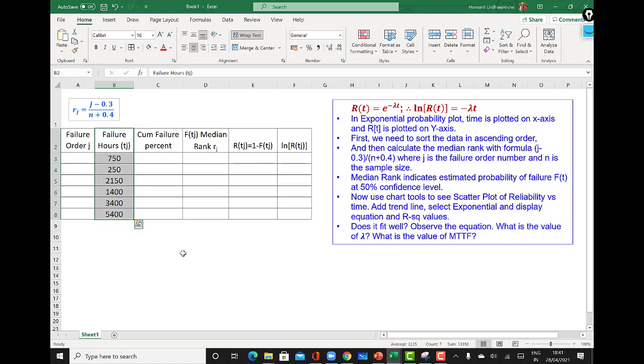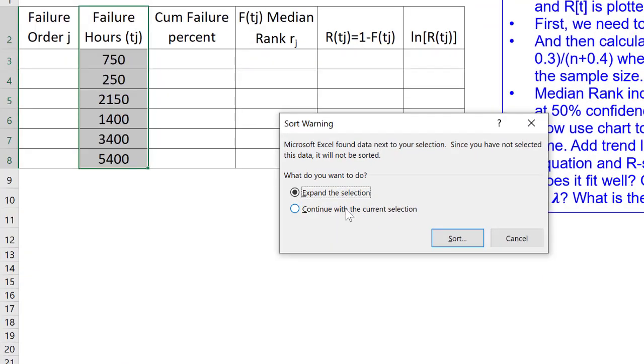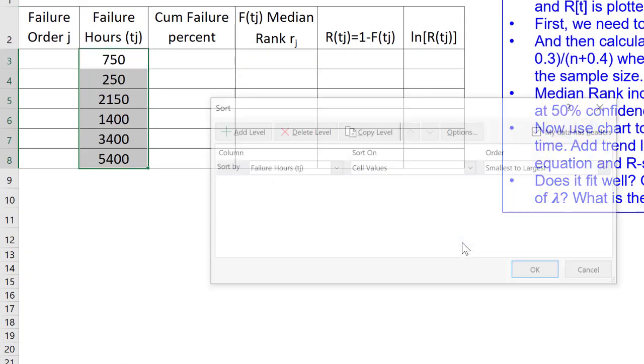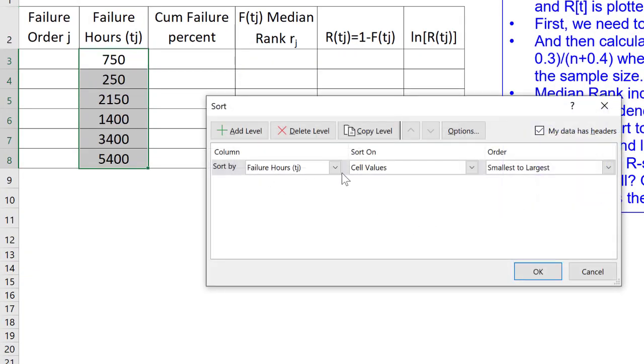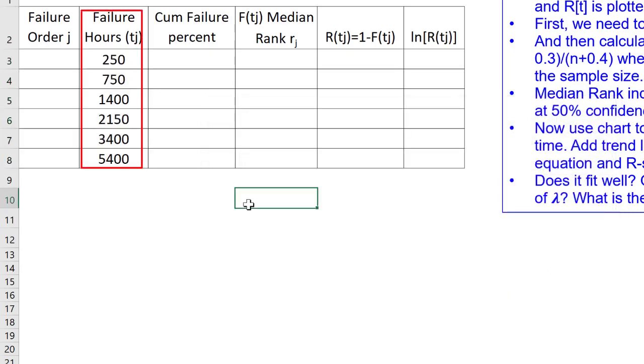First, we need to sort this data in ascending order. So, I use Excel to sort. Use the custom sort and failure hours smallest to largest. Excel has sorted the data from minimum to maximum number of hours.